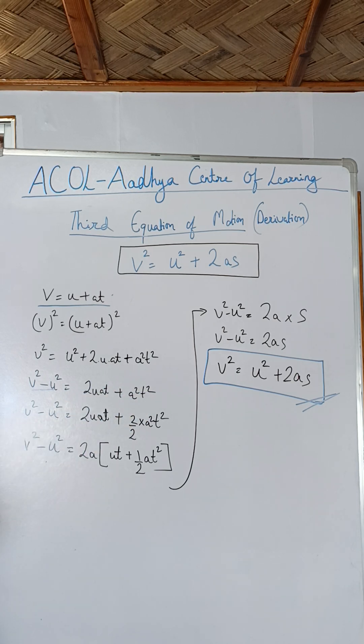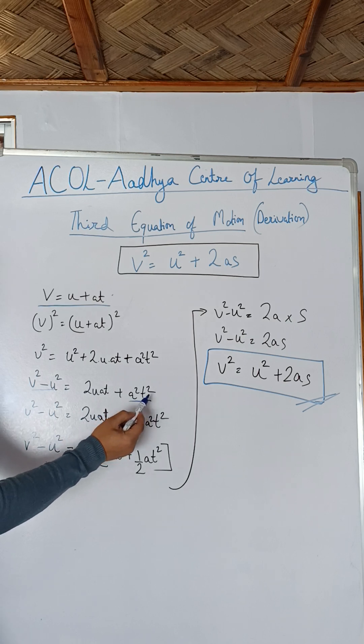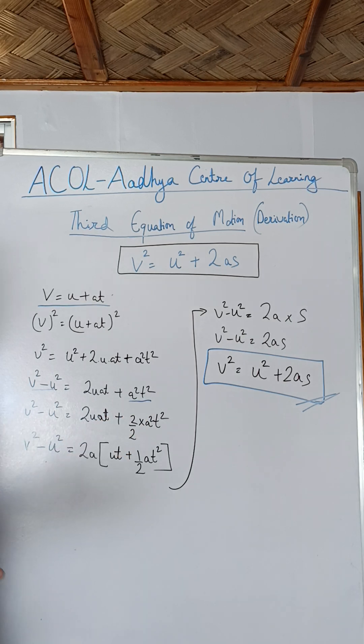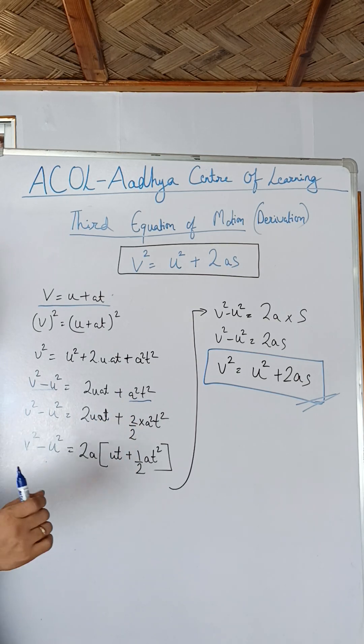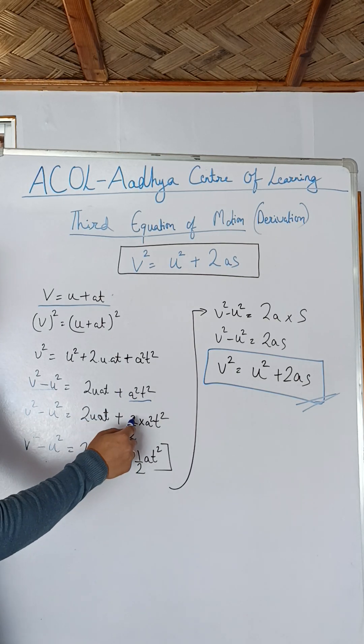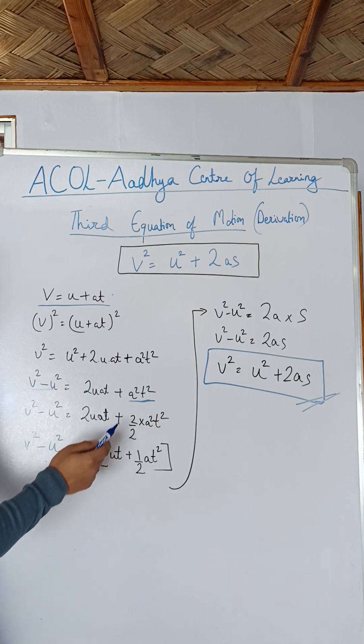So v square minus u square, you just get at square. Now multiplying by 2 by 2. So 2 by 2 multiple times, t square t square, so 2 stays. So multiplying this at square by 2 by 2.